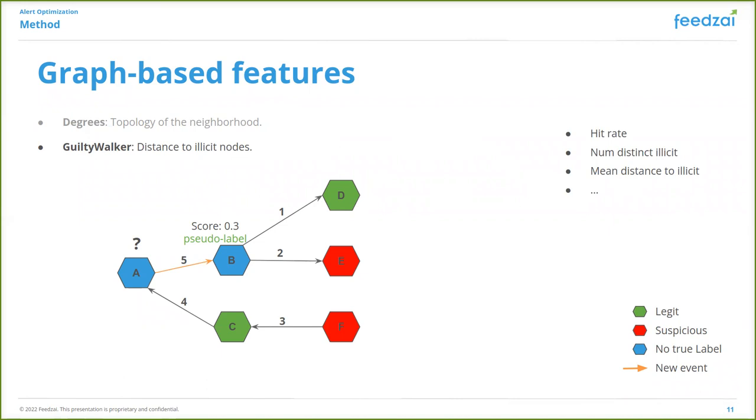To calculate the GuiltyWalker features of our target node A, we perform a set of random walks starting from A that go both directions, with the flow of money and against the flow of money, but always traversing edges that are older than the current one. After that, we summarize these walks in the form of graph features like the hit rate, which is the percentage of the random walks that ended in a suspicious node, the number of distinct illicit nodes that were encountered, and the average distance to illicit nodes.